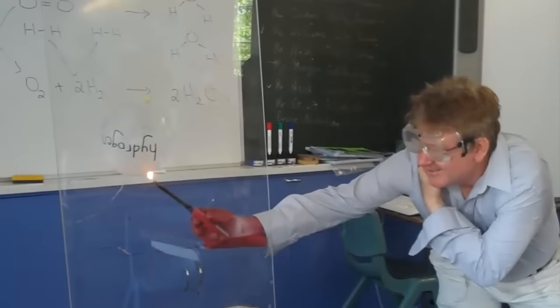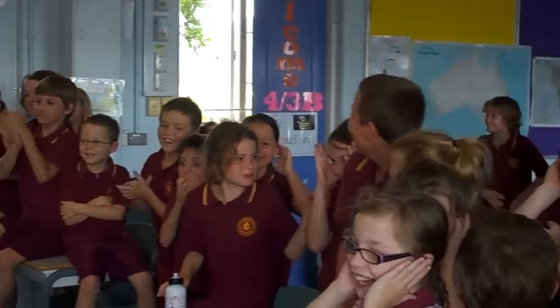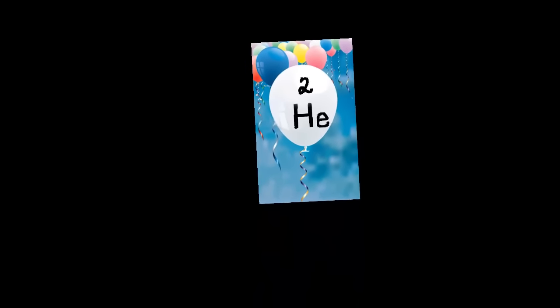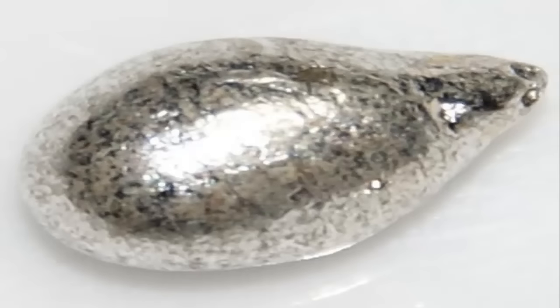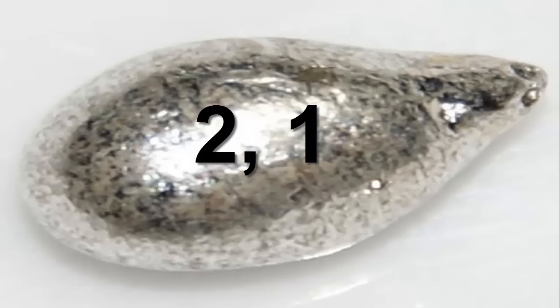For example, hydrogen is an explosive gas because it has just one electron in its outer shell. And helium is an unexplosive gas because it has two electrons in its outer shell. And lithium is a shiny metal because it has an electron configuration of two, one. We will explain how this works later.